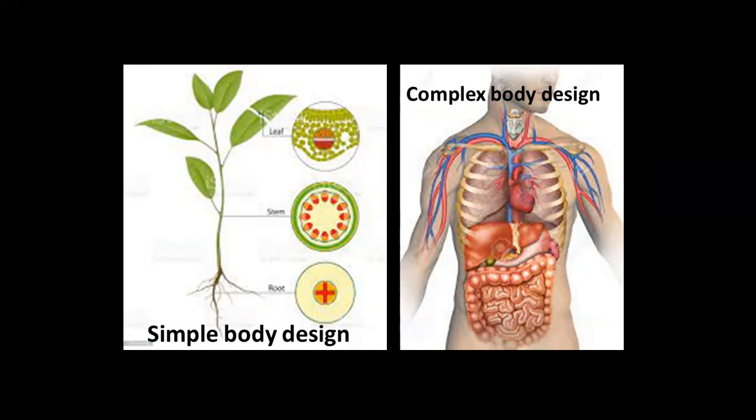Besides this, in the plant body, there are a lot of dead tissues that provide them additional mechanical support and protection because they cannot move from one place to another. On the other hand, in animals, large parts of the body are made up of living tissue.